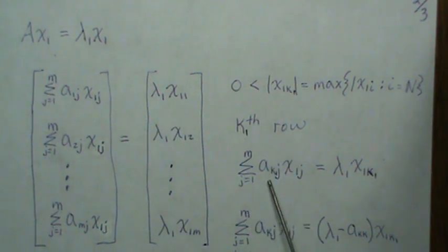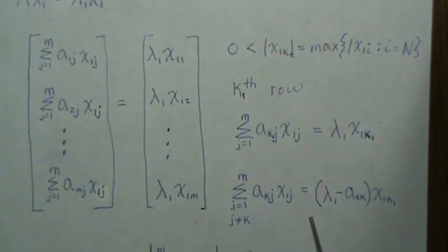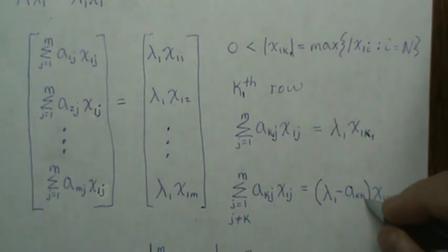So it's the k-th row times the eigenvector, but the kk element is taken out and moved to this side. So the a_kk, and again those are subscripts, we get this.